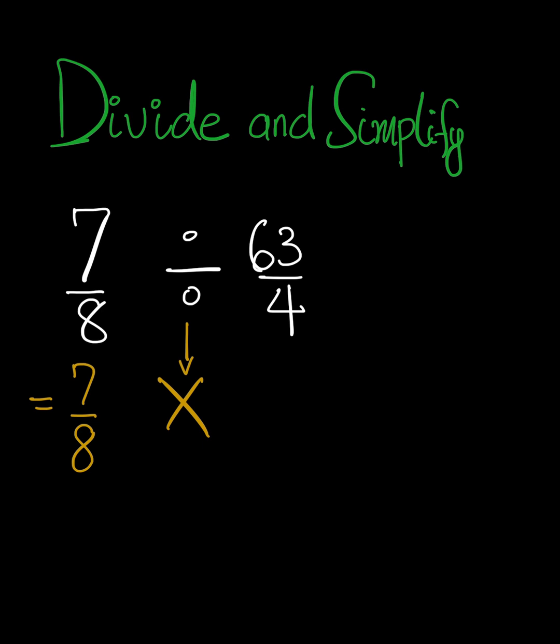We're going to make the 4, which is the denominator, go up, and make the 63 in the numerator come down. That gives us 4 over 63. So you can see we've turned it upside down. Don't forget, the moment you change the division to multiplication, you've got to rotate the fraction next to it.